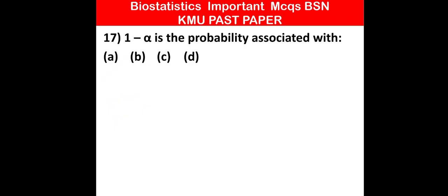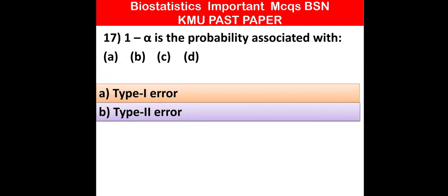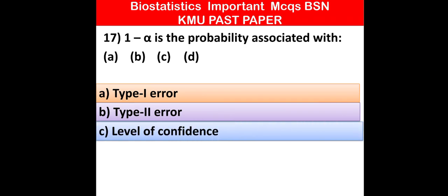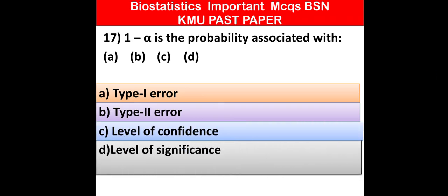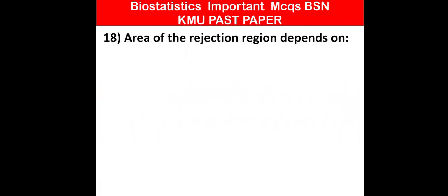MCQ number 17: 1 minus alpha is the probability associated with — Type 1 error, Type 2 error, level of confidence, or level of significance. Which one of the following is correct? Option C is correct: level of confidence.